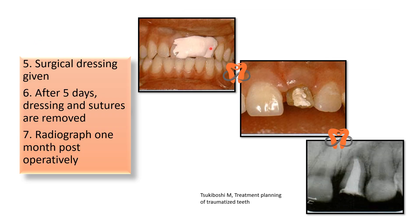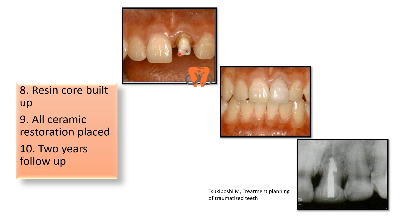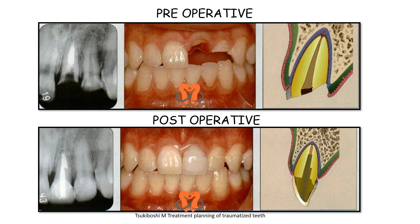The sutures were covered with surgical dressing and removed after 5 days, along with the dressing. Healing of the soft tissue has taken place. The radiograph one month postoperatively shows how well bone has formed around the root and the tooth appears stabilized in the new position. A resin core was built up, and on this an all-ceramic crown was placed. A two-year follow-up shows bone nicely formed around the root, the tooth stable, and the restoration in place.